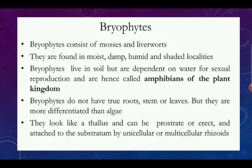Bryophytes are found in moist, damp, humid, and shaded localities — they love moist and shaded places with large amounts of moisture, but they do not grow in flowing or stagnant water. Bryophytes live in soil but are dependent on water for sexual reproduction. They reproduce by male and female gametes, which is why they are called the amphibians of the plant kingdom — they require both water and land.